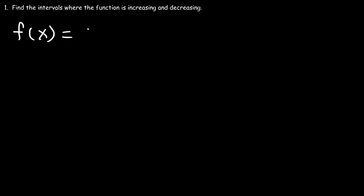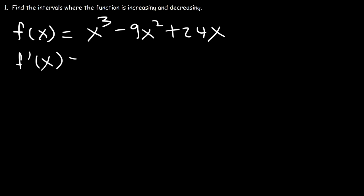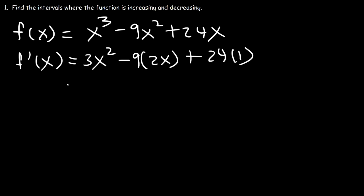Let's work on another example. Let's say f(x) = x cubed minus 9x squared plus 24x. Go ahead and find the intervals where the function is increasing and decreasing. Let's start by finding the first derivative. The derivative of x cubed is 3x squared, the derivative of x squared is 2x, and the derivative of x is 1, so we have 3x squared minus 18x plus 24, and we set that equal to 0.